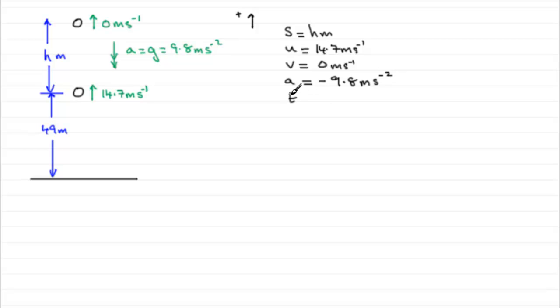As for the time, well we're not interested in the time it takes to go from here to here. We're just interested in that height h. So what kind of equation would we use? Well we should be familiar with our equations. It's going to be the one that involves S, U, V and A and it is V squared equals U squared plus 2AS.